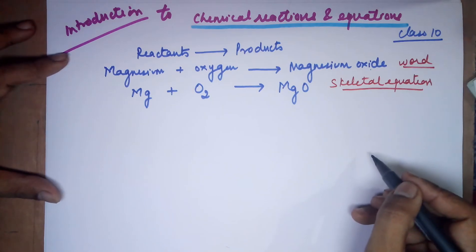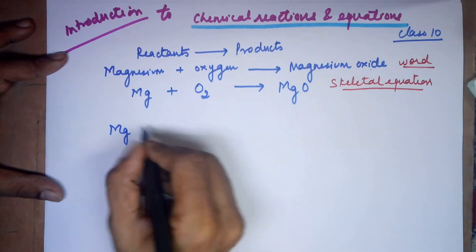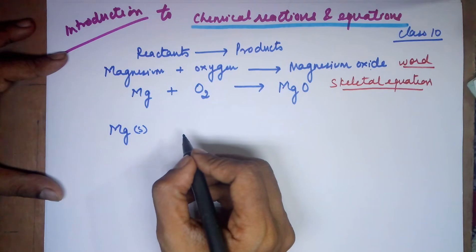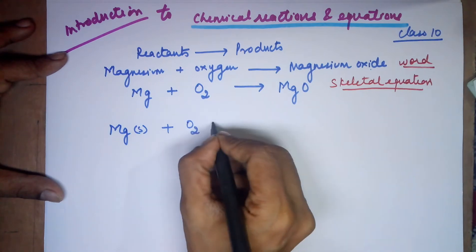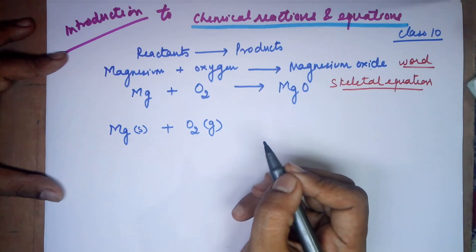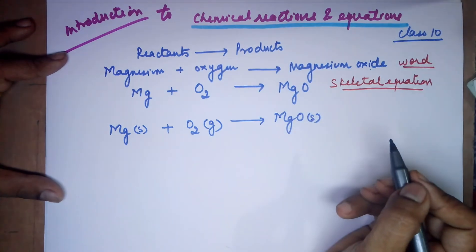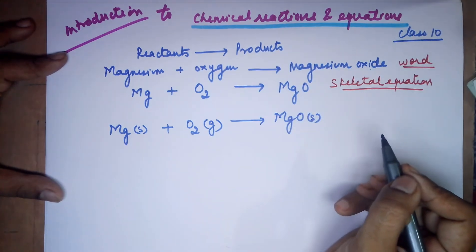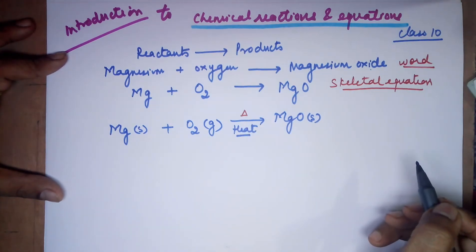You can make your equation a little more informative. For all substances which are solids, you can mention a small 's' in parenthesis. For all substances which are gaseous, you can mention a small 'g' in parenthesis to refer that this substance is a gas. Magnesium oxide is also a solid, so we mention (s) after it. Mentioning a small triangle on the arrow refers to heat — either you write 'heat' or you mention a small triangle showing that to start off the reaction, you require heat.